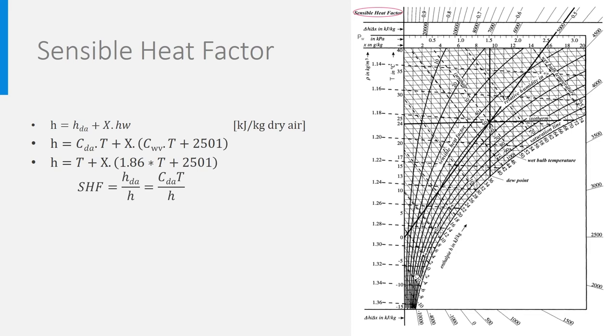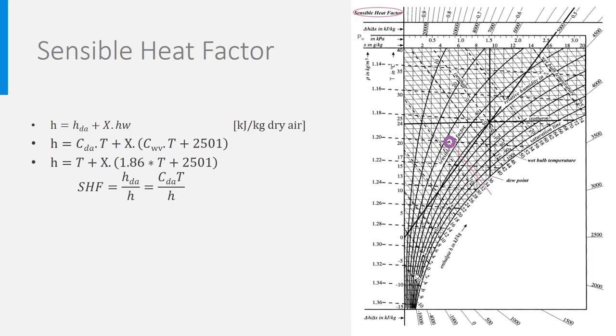Let's take an example of air at 20 degrees and absolute humidity 5 gram per kilogram. The enthalpy is then 32.7, you can calculate it like on the left or look at it on the diagram. To estimate SHF factor from the Moliere diagram, you just need to draw a line between dry air at 0 degree and the point for which you want to know this SHF and continue this line up to the axis with sensible heat factor SHF, where you can read the value of 0.61.